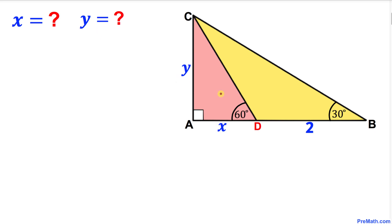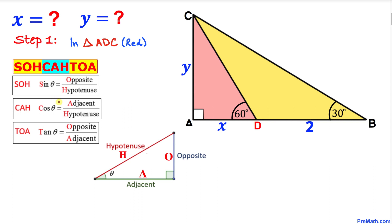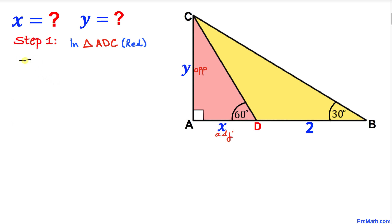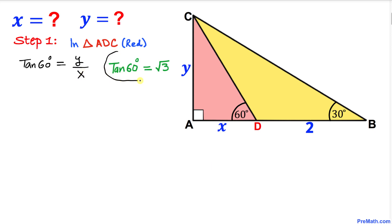Let's get started with the solution. First, let's focus on the red triangle ADC. Using trigonometric ratios, we are interested in tangent equal to opposite over adjacent. Our angle is 60 degrees, so the opposite side is Y and the adjacent side is X. Therefore, tangent of 60 degrees equals Y divided by X, and we know that tangent of 60 degrees is square root of 3.